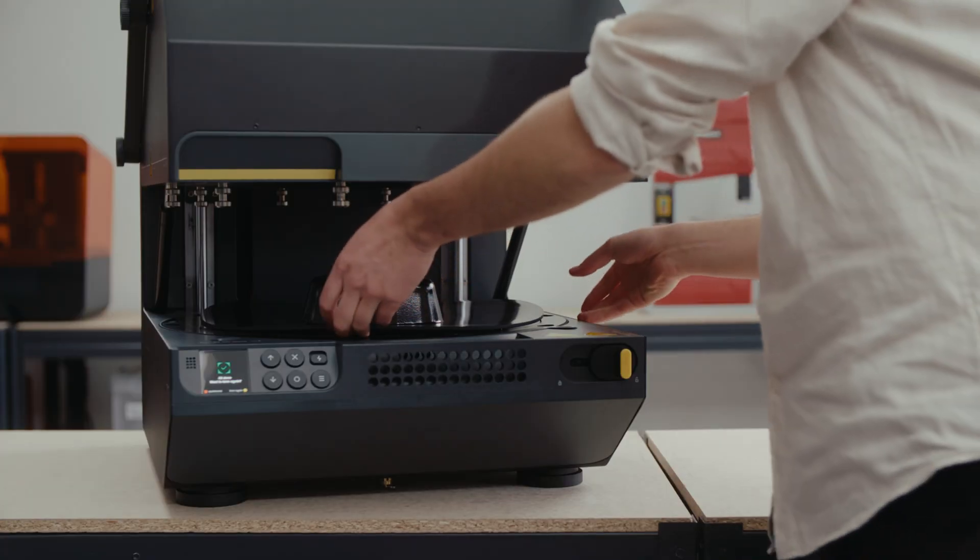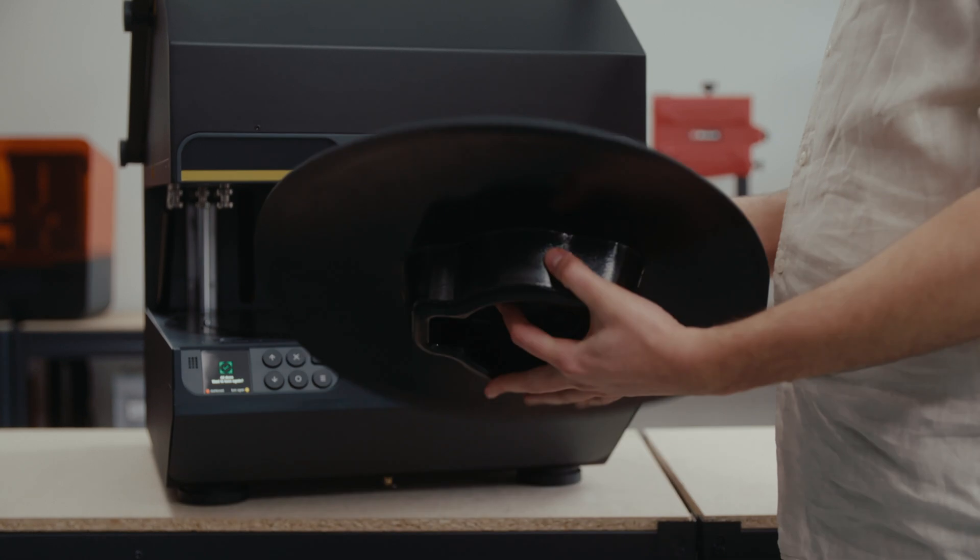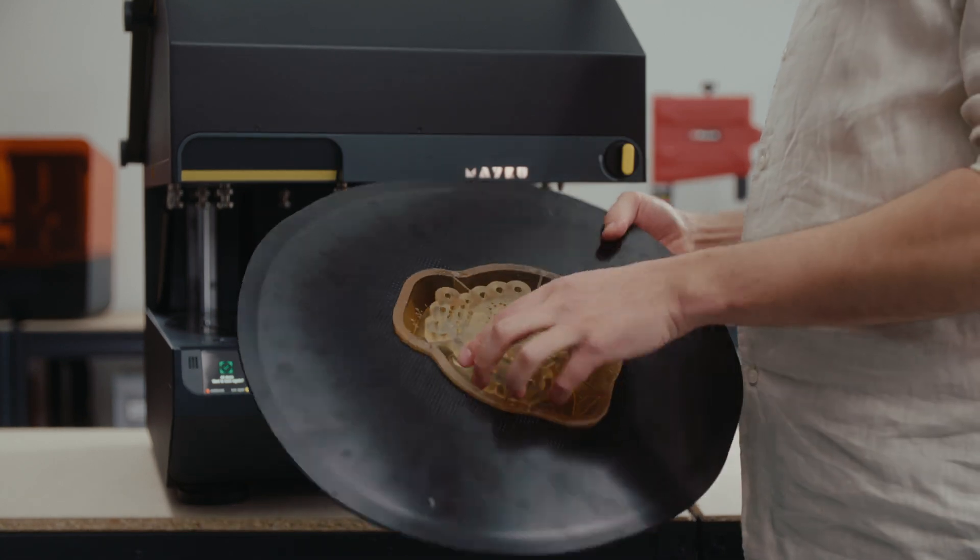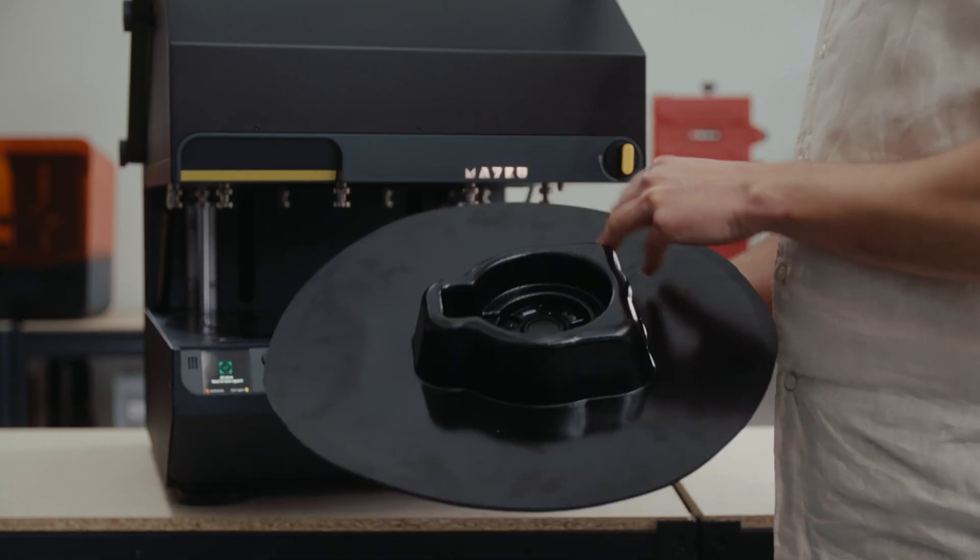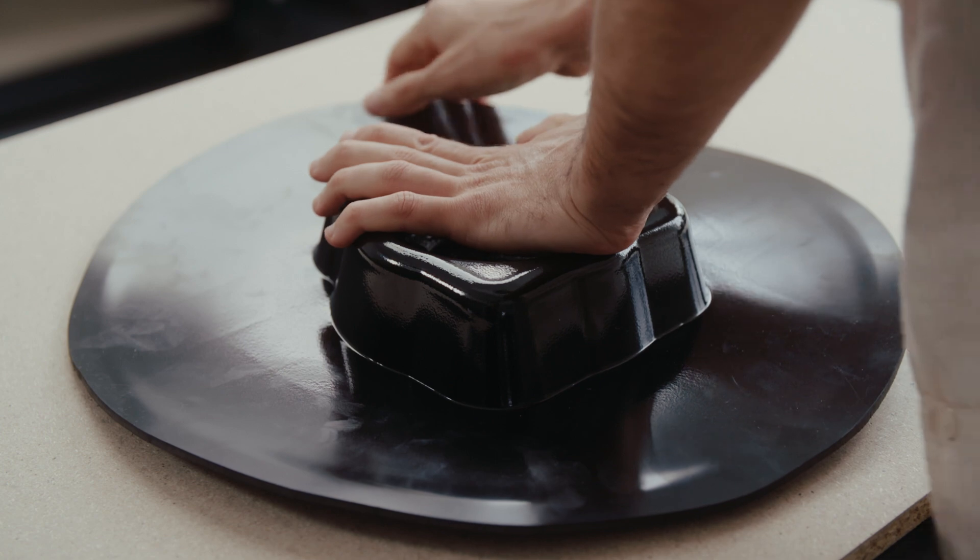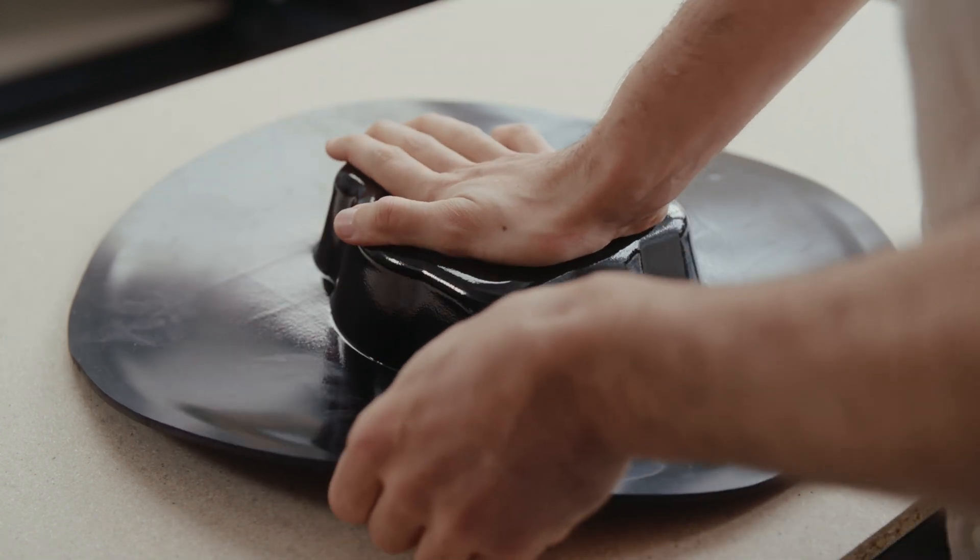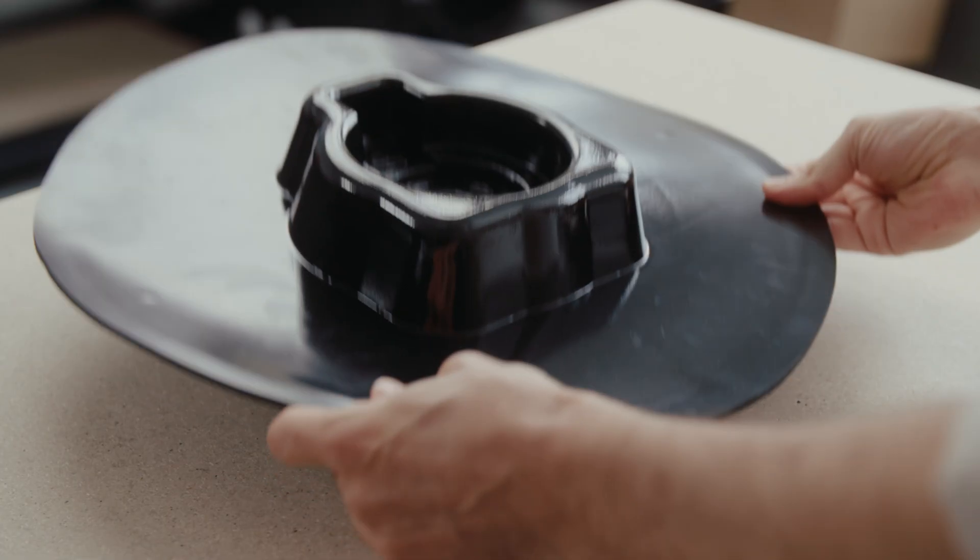We're now going to remove the formed part from the multiplier and demold it. If you've used the release agent and your template has generous draft angles, the demolding process will be easy. However, if your template has a complex geometry, you may need to apply some force to remove the template or blow some air with an air gun using the multiplier's compressor mode.